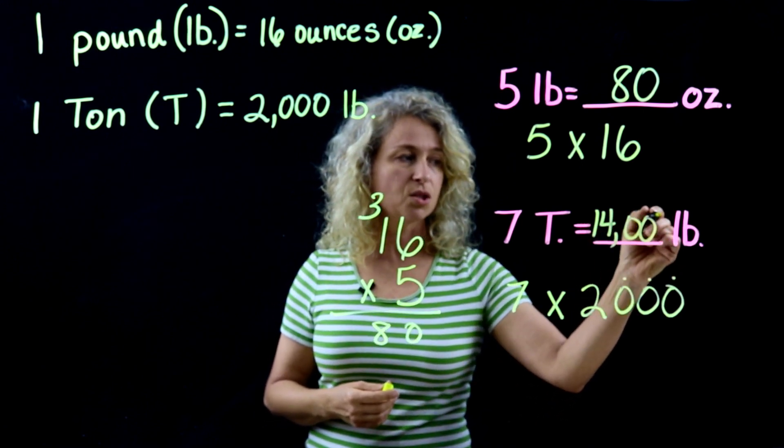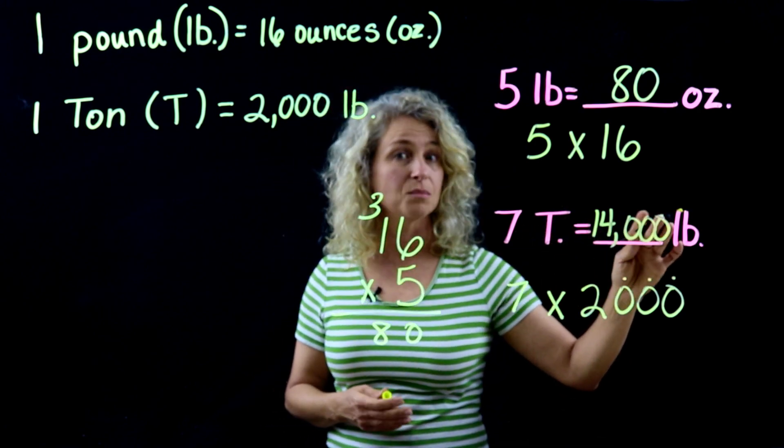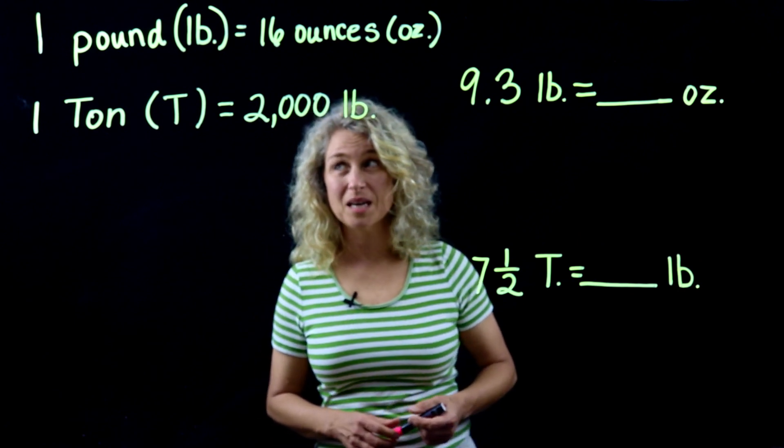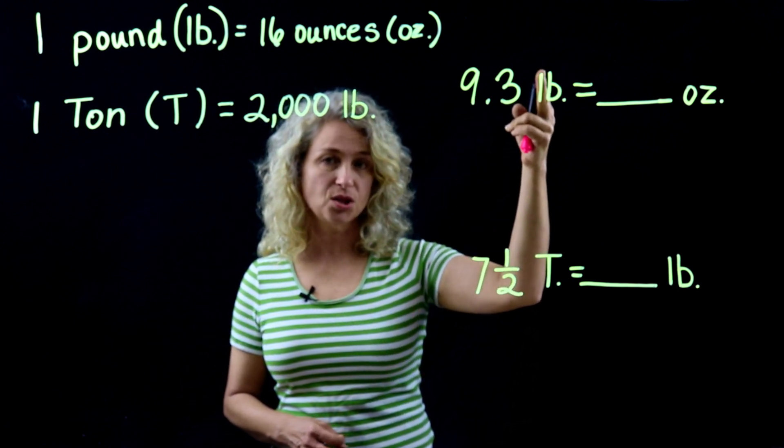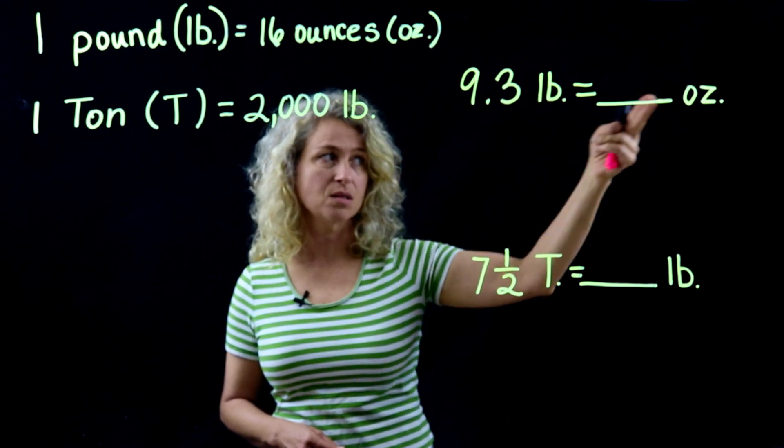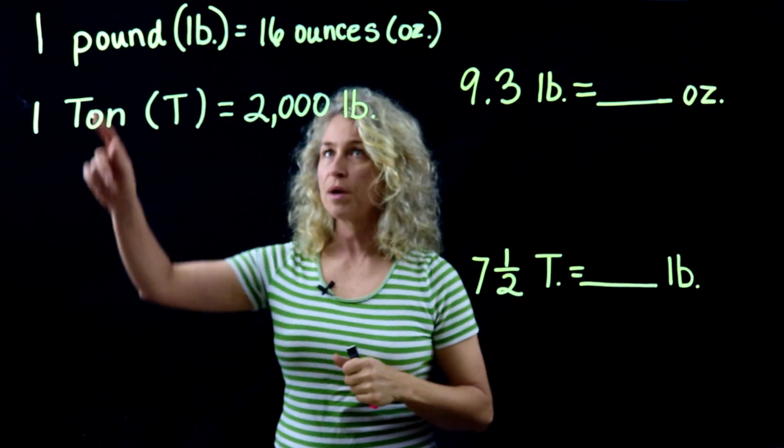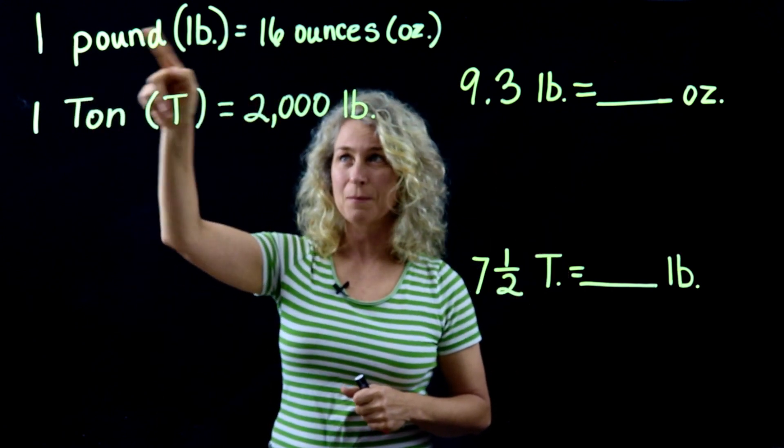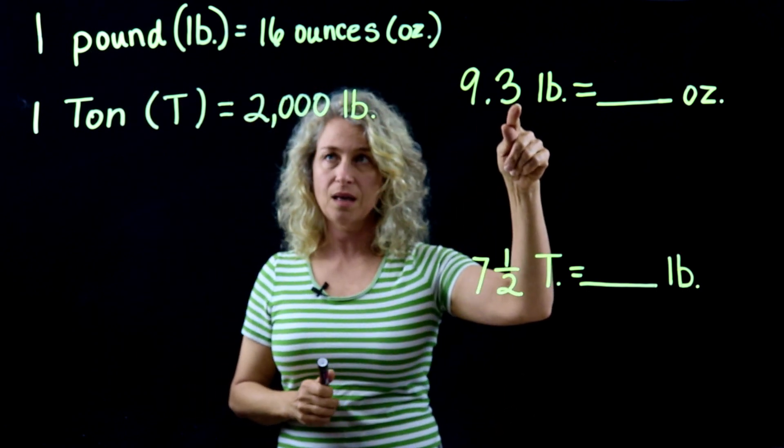All right, so here's a couple more examples. We have a number with a decimal and we're changing 9.3 pounds to ounces. So let's look at this first one. We're going to use the first conversion right here, pounds to ounces. So 9.3, and we're going to multiply that times 16.